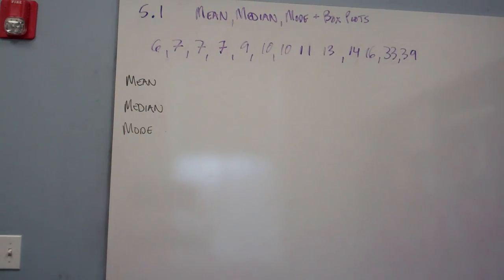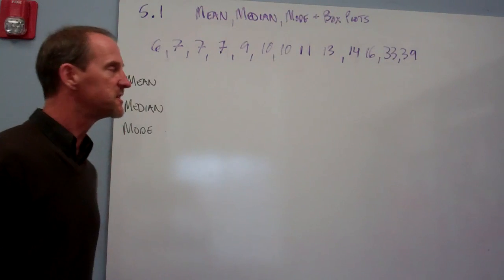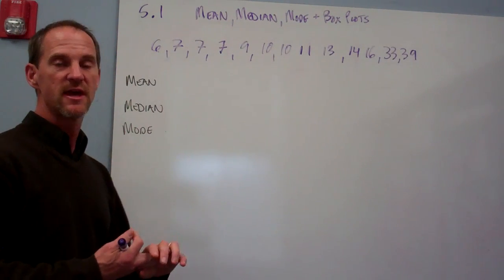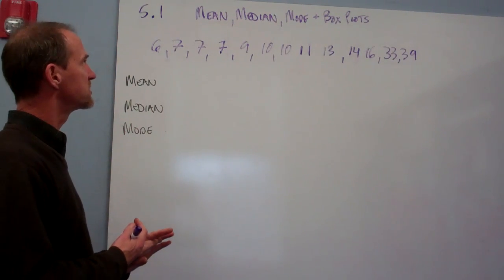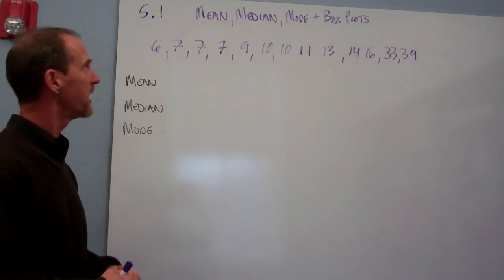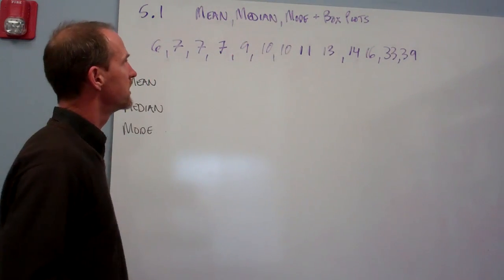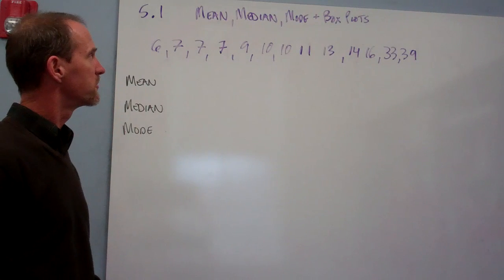Okay, here we go, section 5.1, the basics of statistics. We are learning about three important words that we use to describe a data set: the mean, the median, and the mode. And then we use those parts to help us draw box plots.